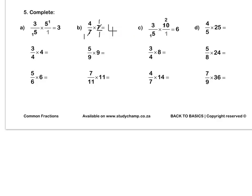Question C: we put 10 over 1. Then we simplify our 10 and our 5 by dividing by 5, and we multiply out: 3 times 2 is 6 over 1, which is 6. Let's do this one together. We can put 25 over 1, then we simplify — divide by 5, divide by 5 — and we multiply to get 20 over 1, or 20. Press pause to complete questions C and D by yourself.